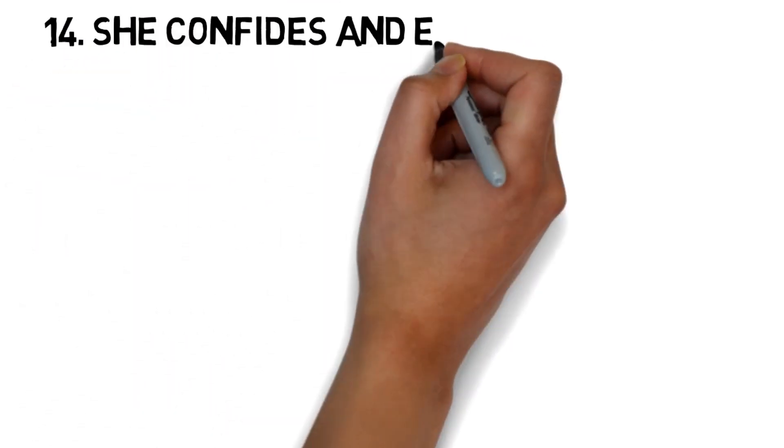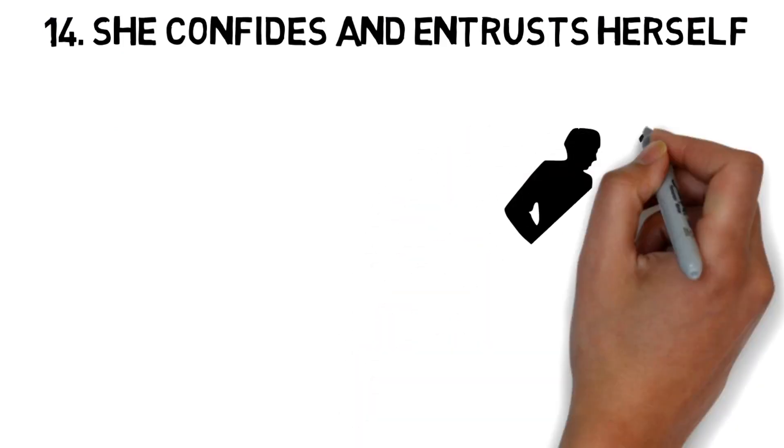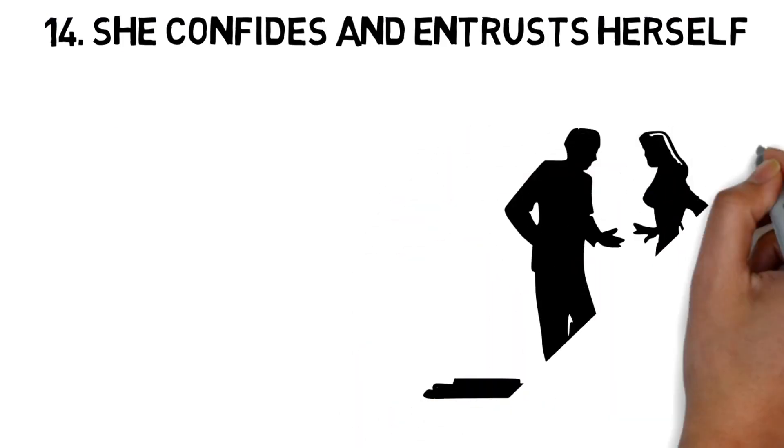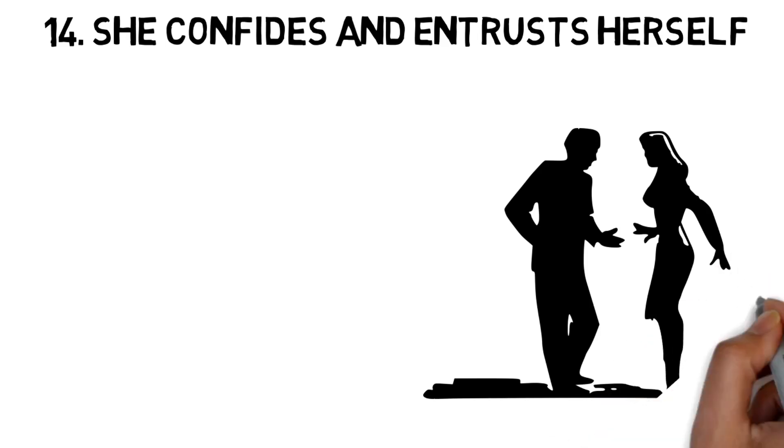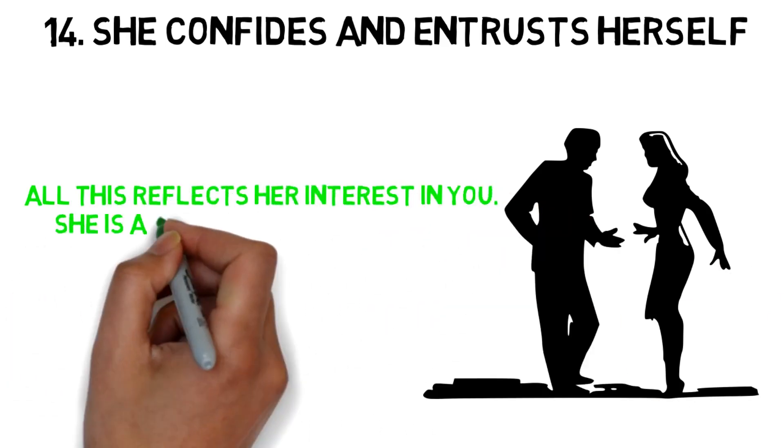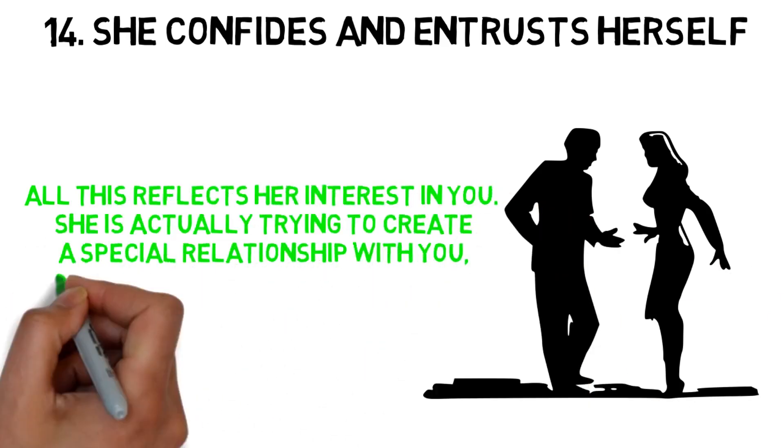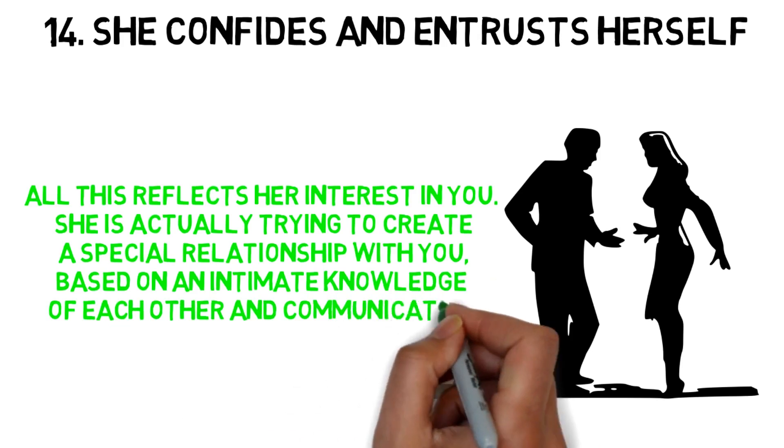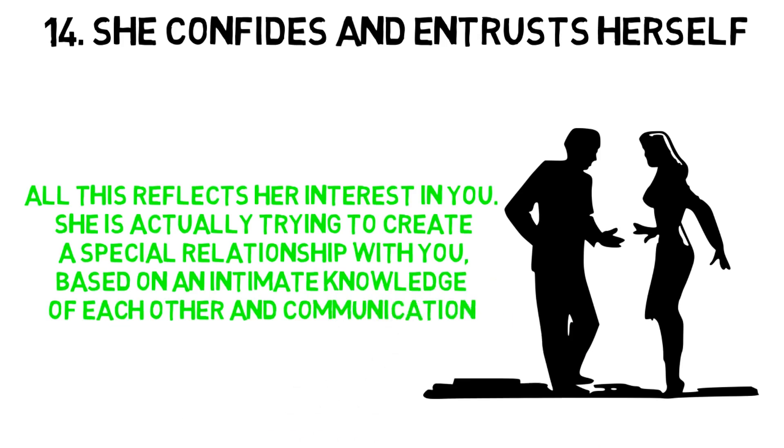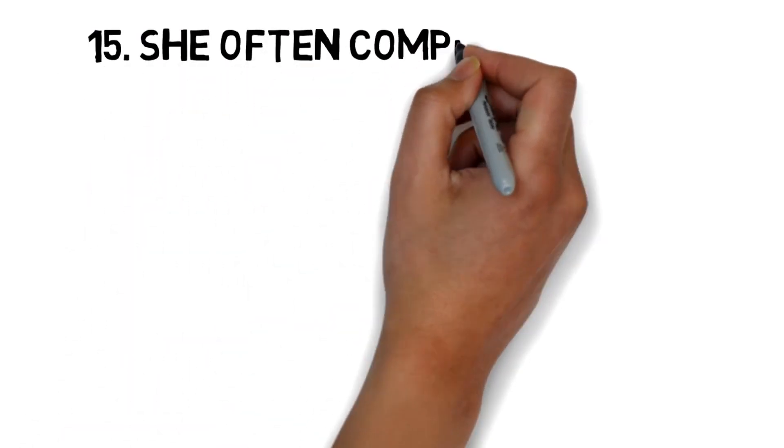14. She confides and entrusts herself. If you want to know if a woman loves you, you also have to be attentive to what she says. Does she share with you how she feels? Does she engage in deep and sincere conversations? Does she try to present herself in a nice way? All this reflects her interest in you. She is actually trying to create a special relationship with you, based on an intimate knowledge of each other and communication. Two fundamental pillars of a romantic relationship for a woman.